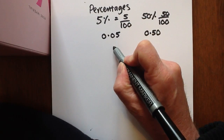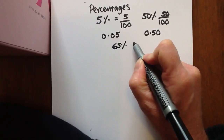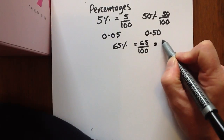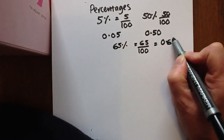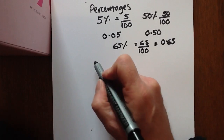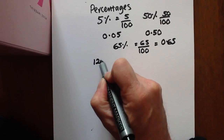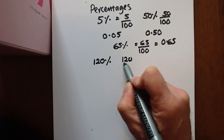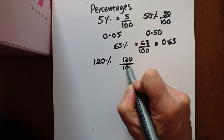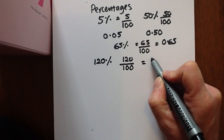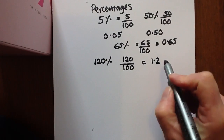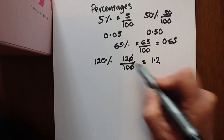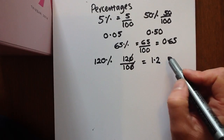So how about 65%? That would be 65 from 100, which would be 0.65. How about something that's over 100%? Say 120%. That's 120 over 100, which is 1.2. Cancelling the 0, that's 12 over 10 — 10 goes into 12 once, with 2 over.